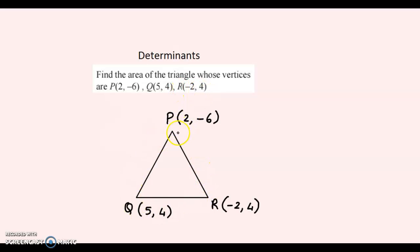We have drawn a triangle with vertices P, Q, and R and their corresponding coordinates. Now, let us name this as x₁, y₁, this as x₂, y₂, and this as x₃, y₃.